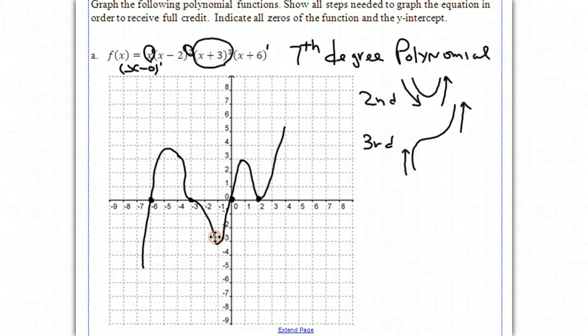Once again, we have a single root at negative 6. We have a triple root at negative 3 because of the 3 in the exponent of (x + 3). We have a single root at 0 because of the x to the first power. We have a double root or multiplicity of 2 at 2. And there you go. I hope this helps.